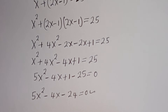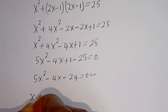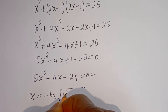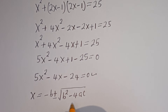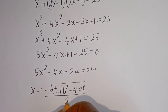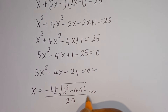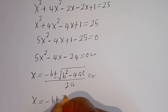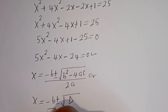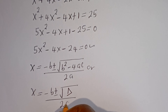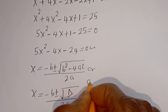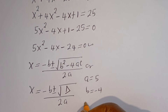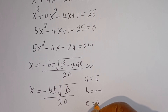Let's solve this using the quadratic formula. From 5x squared minus 4x minus 24 is equal to 0, we identify: a is equal to 5, b is equal to minus 4, and c is equal to minus 24.